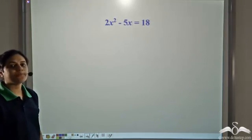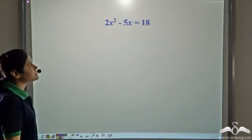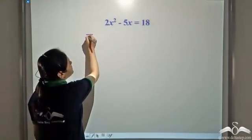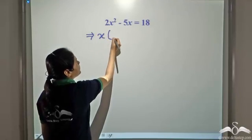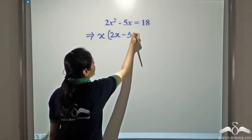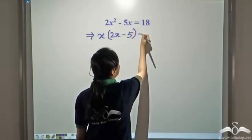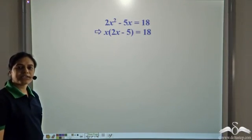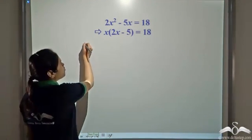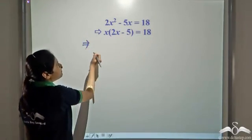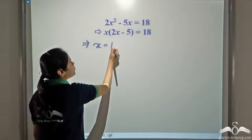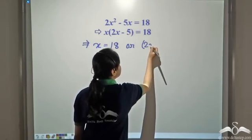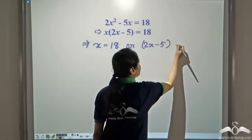Now let us solve one more example. As in the previous case, let us factorize the left hand side. In the left hand side, we have x common. So let us take x common and write it as x into 2x minus 5 equals 18. So we write: either x equals 18, or 2x minus 5 equals 18.